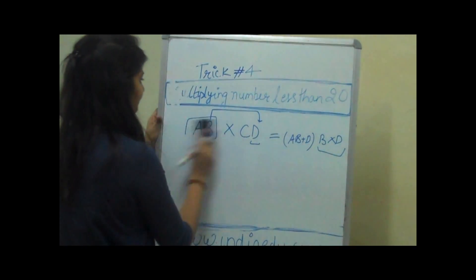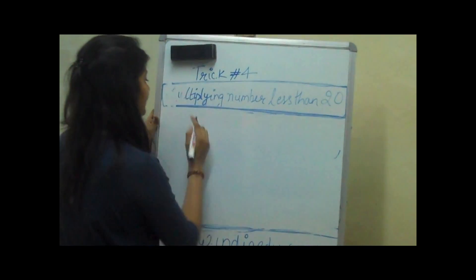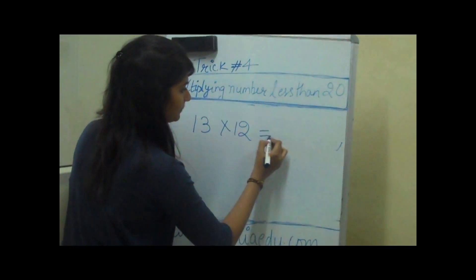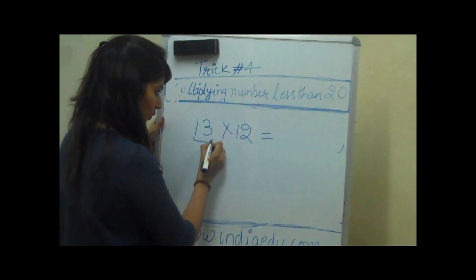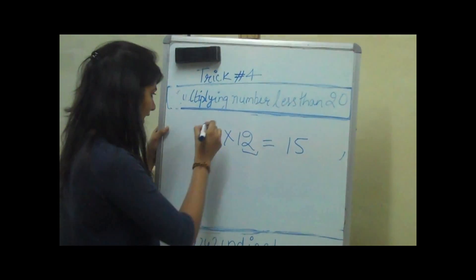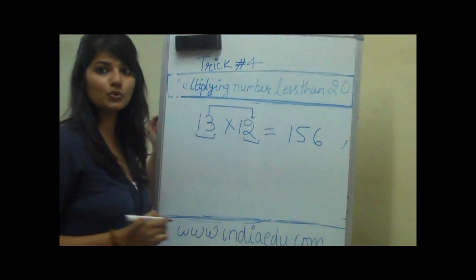Let's take an example. If we have a number 13 and we want to multiply it with 12, we will add this whole number to the last digit. 13 plus 2 is 15 and then multiply 3 with 2 which is 3 into 2 equals 6.